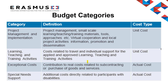Before we move on to recording your organisation's spend, here's a reminder of each budget category specific to a KA229 project. Both the Project Management and Implementation and the Learning Teaching Training Activities budget headings are funded on a unit cost basis — costs fixed by the European Commission. Exceptional costs and special needs support are real costs, meaning any eligible pre-approved claims will need to be supported by invoices and are reimbursed at the rates specified within the programme guide.